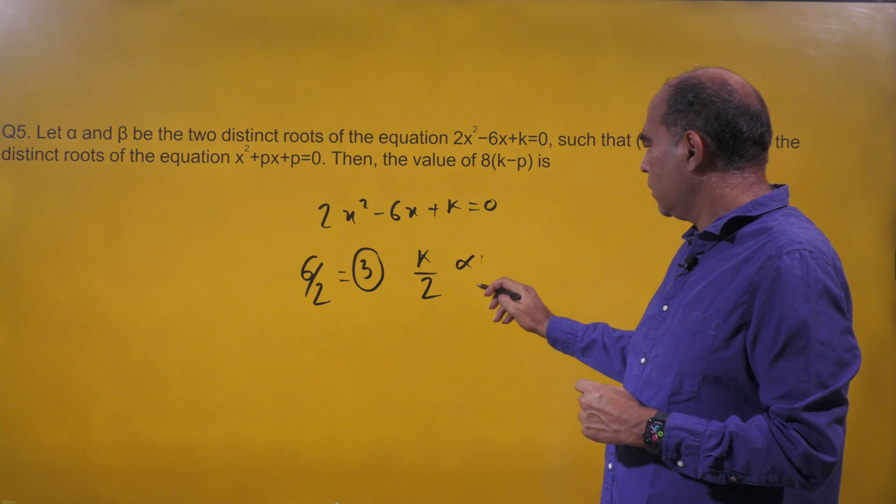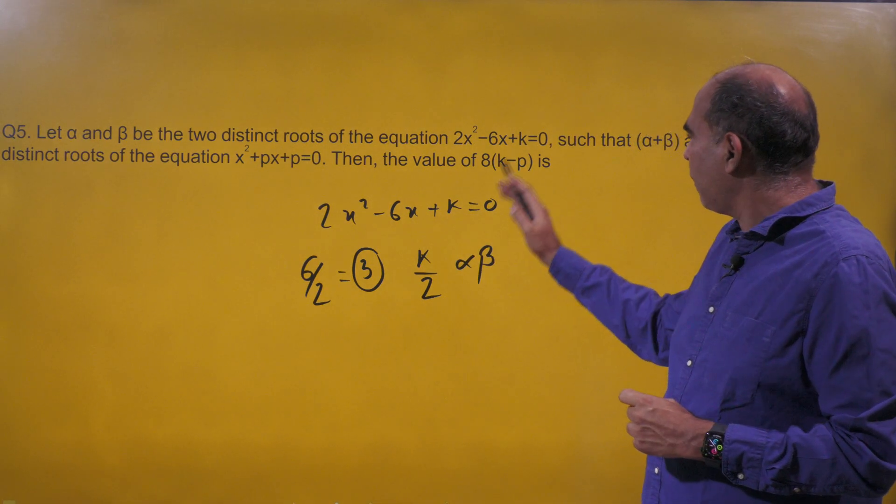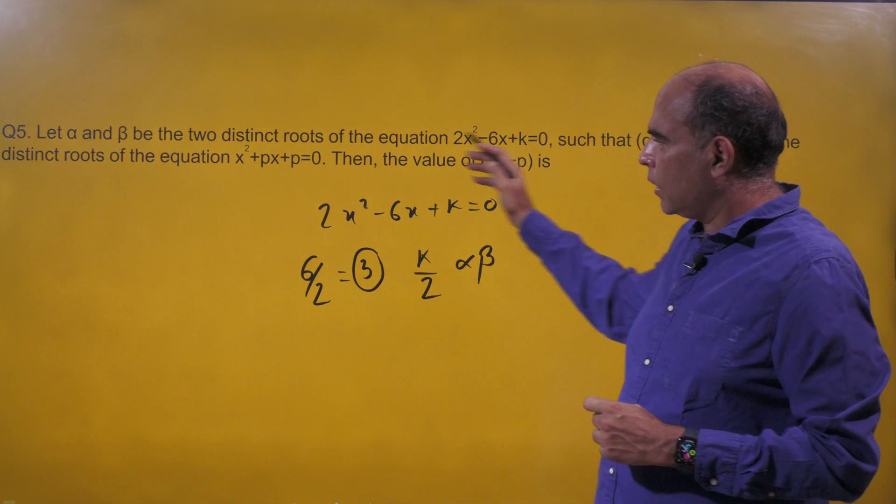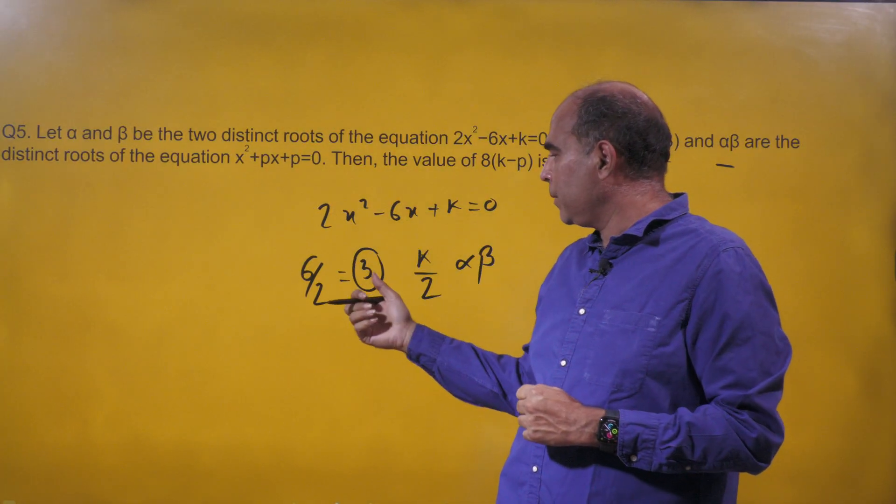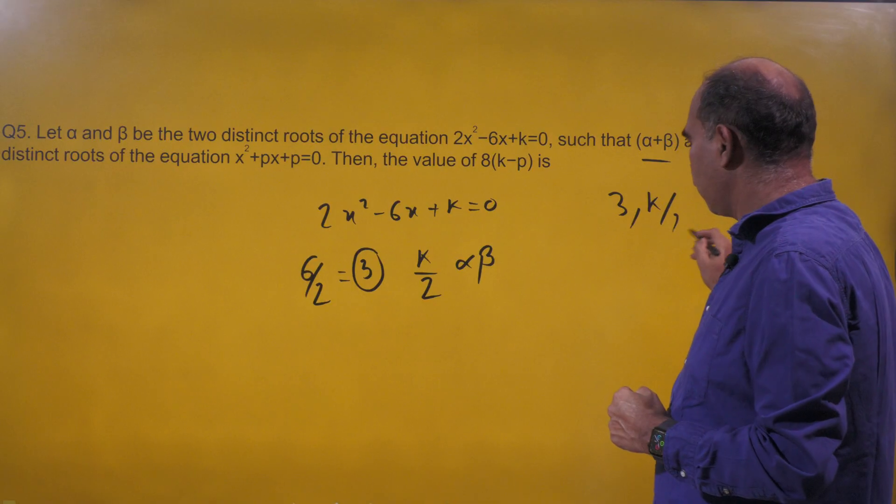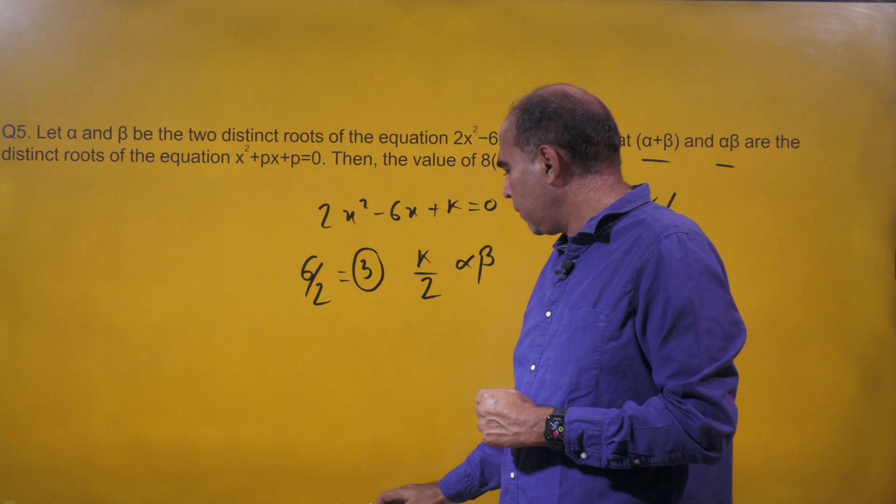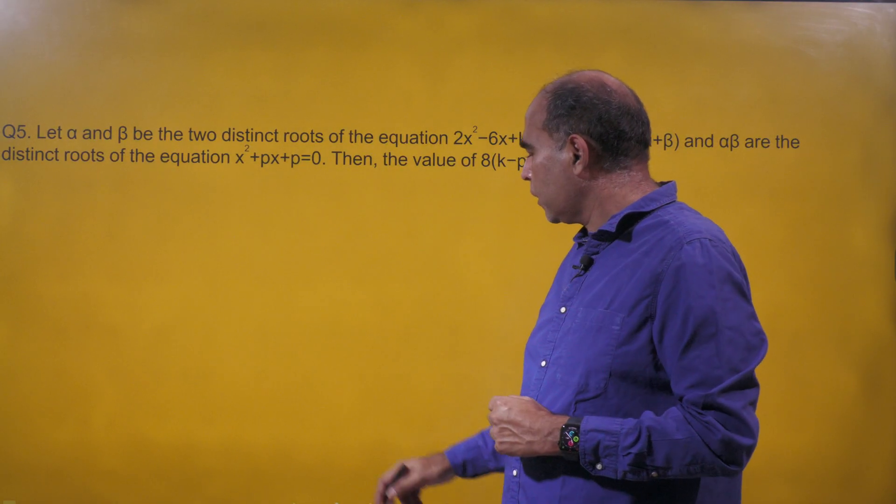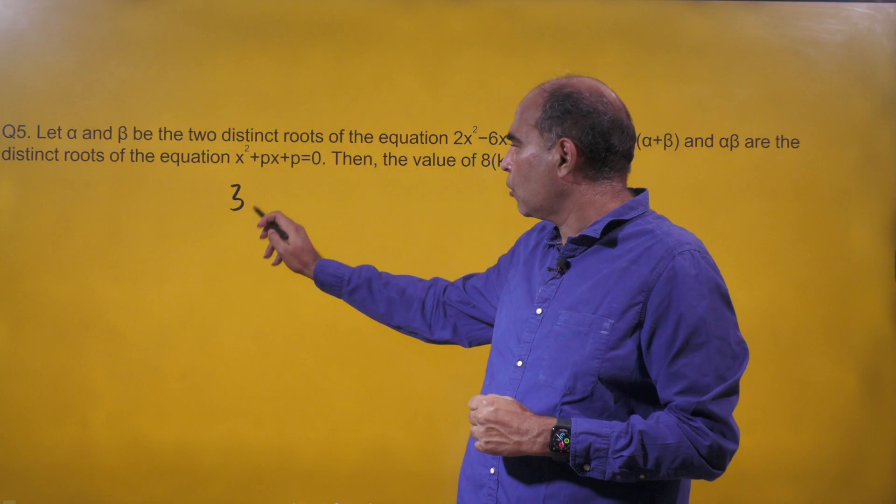What they are saying is that α + β and αβ are the roots of this equation, which means 3 and k/2 are the roots of the second equation. With this information we can go ahead further.